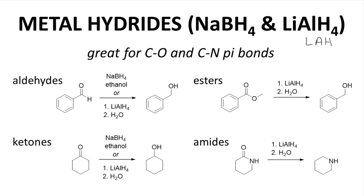Note that the acid derivatives behave a little differently from one another. With esters, the carbonyl oxygen remains in the product and forms an alcohol. With amides, the carbonyl oxygen is completely lost and replaced with two hydrogens. In all instances, the carbonyl carbon loses bonds to electronegative atoms and gains hydrogens — these are certainly reductions.